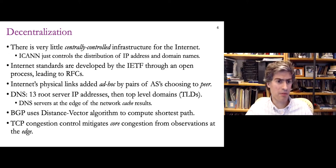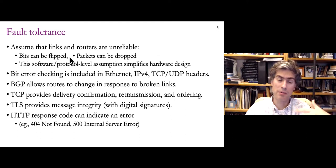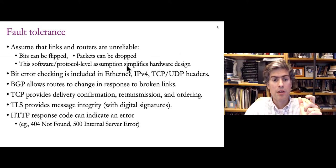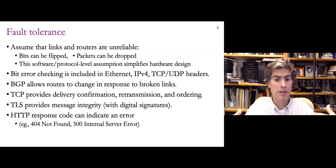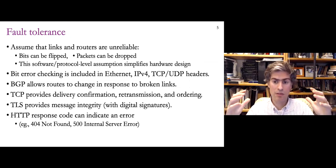Fault tolerance is also important because the internet is unreliable — or allowed to be unreliable — yet still operates effectively. We assume that links and routers are going to be unreliable, that bits can be flipped, that packets can be dropped. In some ways, allowing the low-level stuff to be unreliable is liberating — it allows links to be fast and cheap with high capacity, because at higher protocol levels we implement solutions to deal with that unreliability.